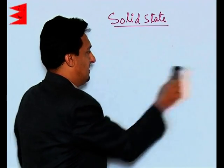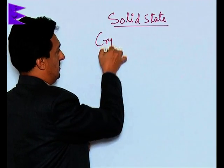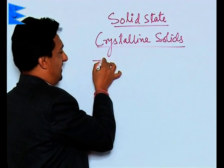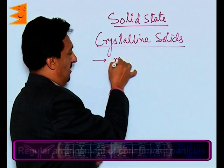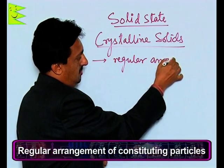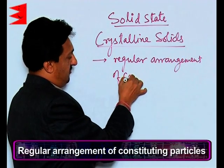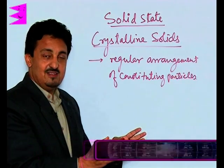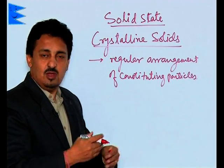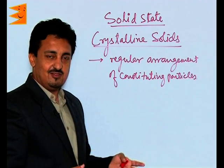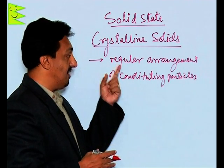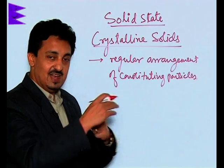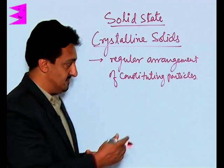Let us start with crystalline solids. Crystalline solids are the solids in which we have a regular arrangement of constituting particles. These particles can be atoms, molecules, or ions, depending on the type of crystalline solid. These solids have a regular arrangement of the constituting particles in a definite pattern, which is repeated in all three dimensions or along all three axes.